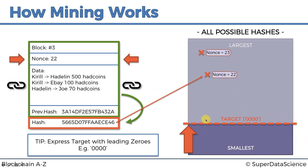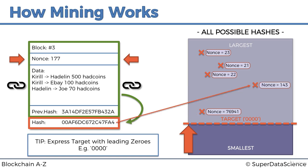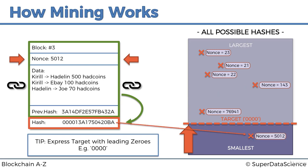We cannot add this block to the blockchain until the hash is below the target, so all we can do is keep guessing different nonces. That's essentially what miners do — they sit there and change the nonce to try to guess a value that will generate a hash below the target. Once they find one — say nonce 5012 — through brute forcing, that nonce is commonly called the 'golden nonce,' because it generated a hash below the target with the required leading zeros.